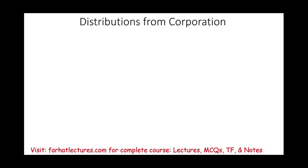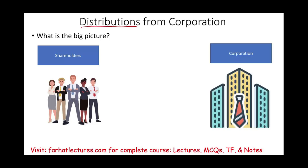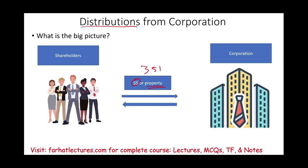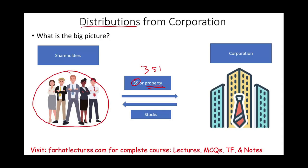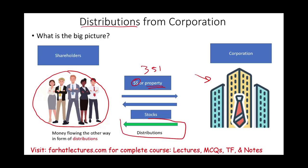Hello and welcome to this session in which we will discuss distributions from corporations. When the corporation was formed by the shareholders, it was formed by shareholders contributing money and property. Under Section 351, this transaction is not taxable. In return, the corporation issues stock to the owners — these individuals become owners in this corporation. At some point, money will start to flow the other way, from the corporation to the shareholders in the form of distributions.